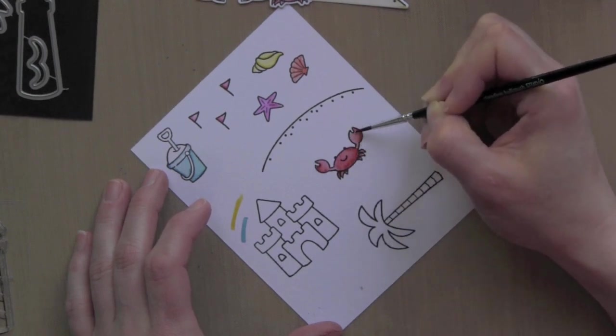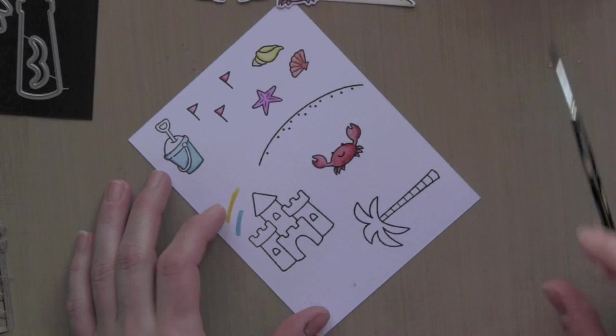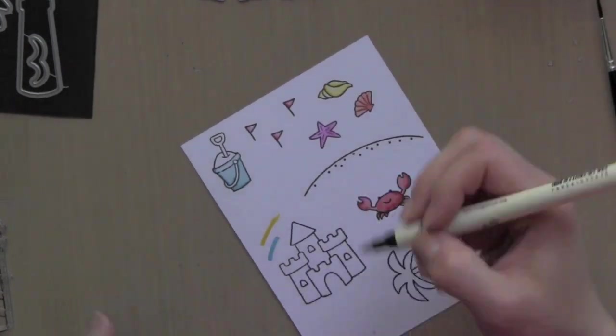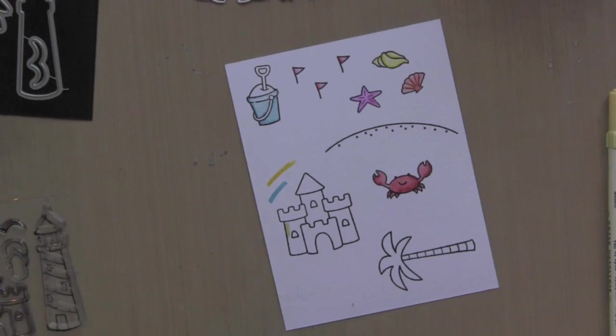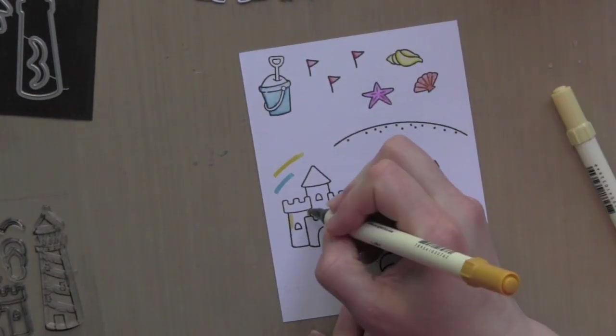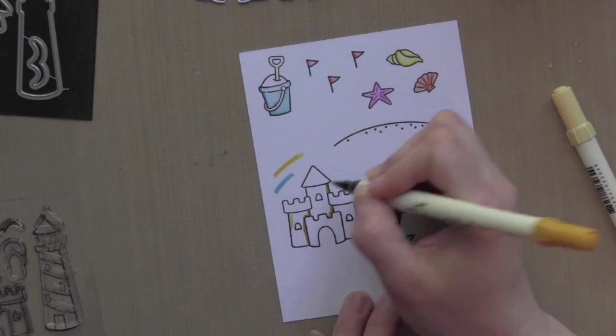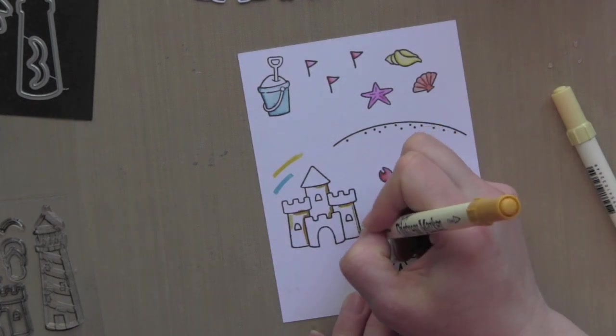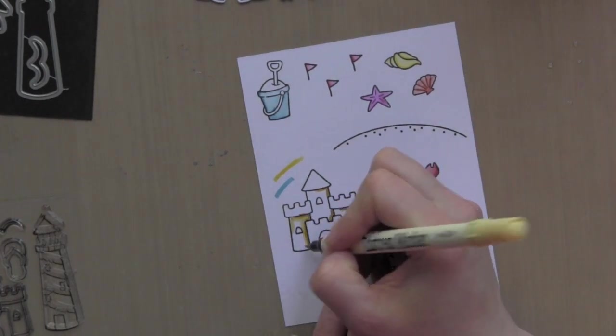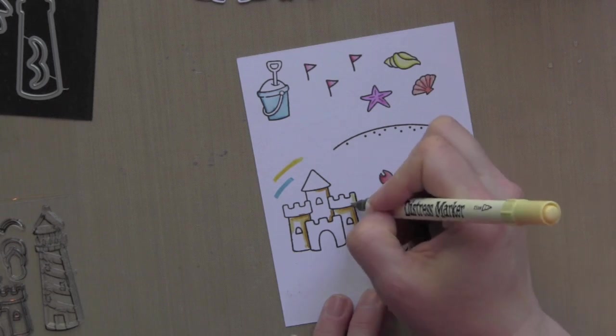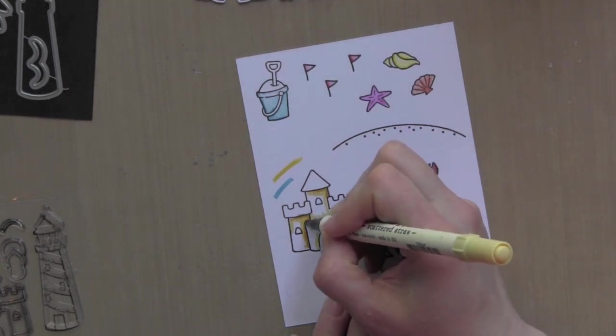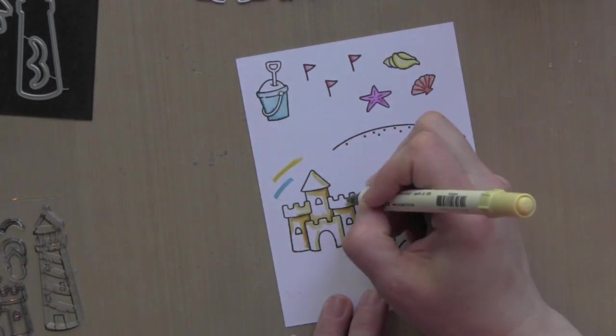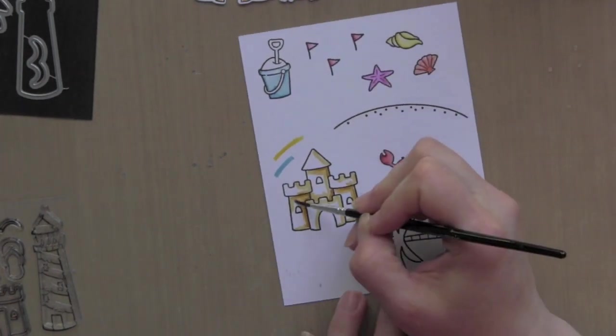Just something a little different than maybe Copic marker coloring or colored pencils and Gamsol like I use quite a bit of. Just something fun and new. I love the watercolor look so I thought it would be fun to try out my distress markers with watercoloring. I'm using a little scattered straw and also wild honey for my sand castle and I will be using the same colors for the sand landscape there.